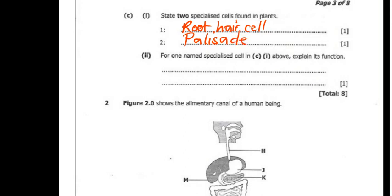And then question 1(c)(ii) says, for one named specialized cell in (c)(i) above, explain its function. So you can choose either one that you have mentioned. You can either choose the root hair cell or the palisade cell. But in this particular question, we're going to choose the root hair cell to which its function is to absorb water and mineral salts from the soil. So you're going to say root hair cell or the root hair cell.